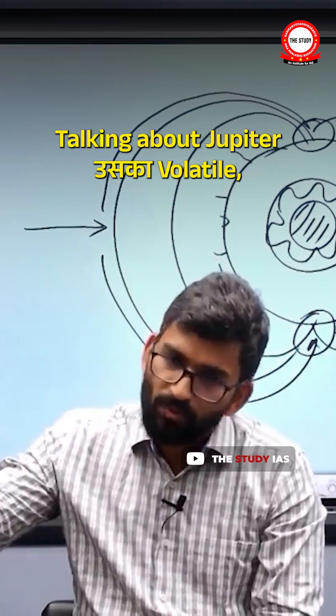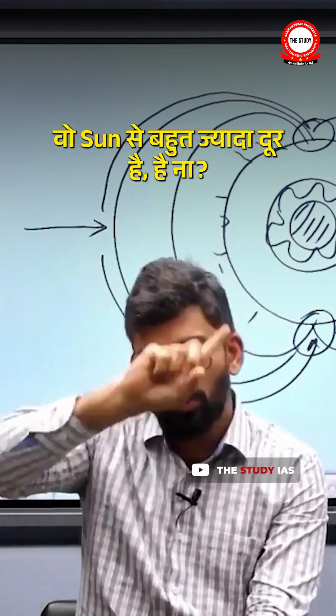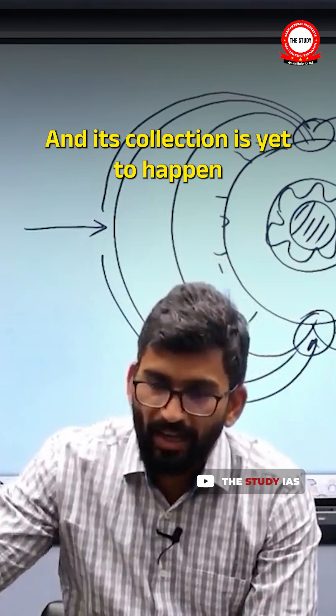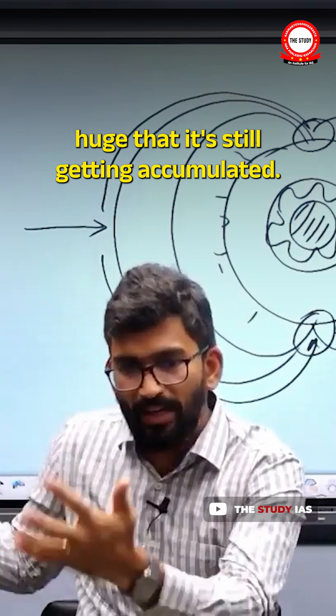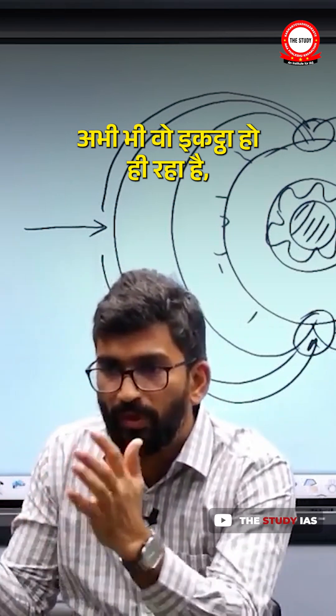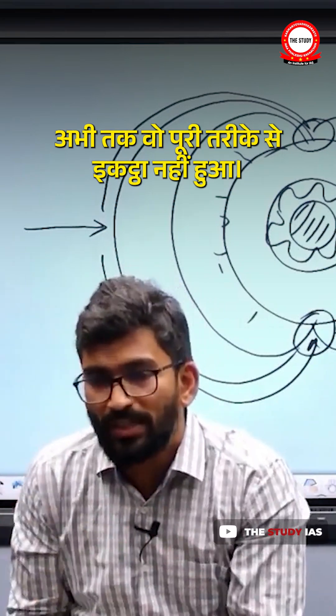Talking about Jupiter, it's volatile and non-volatile material now because it's far from the sun. And its collection is yet to happen because the amount of material was so huge that it's still getting accumulated.